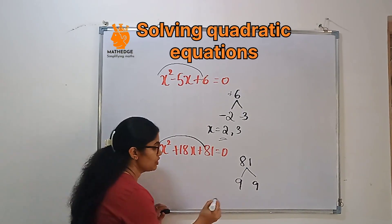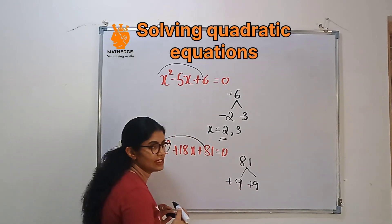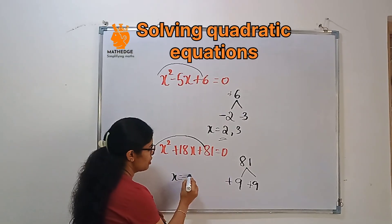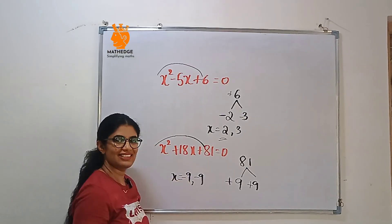So here we have a plus 18. For both the factors, I can give plus 9 and plus 9. Then after that, just reverse the sign. So x is equal to minus 9, minus 9.